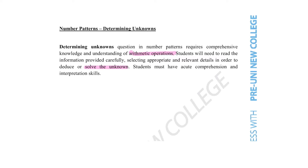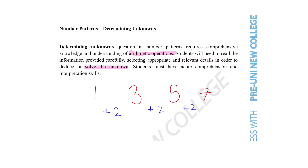Now, what is a number pattern? The definition of a number pattern is a list of numbers that follow a certain sequence or pattern. An example would be the list of numbers 1, 3, 5, and 7. Looking at these numbers we can tell they follow a certain sequence — they are all increasing by 2. Now that we've established what a number pattern is, let's look at how we can use this concept to solve determining unknowns questions.